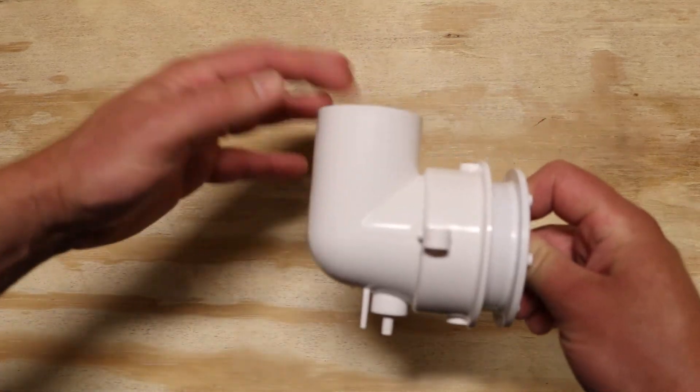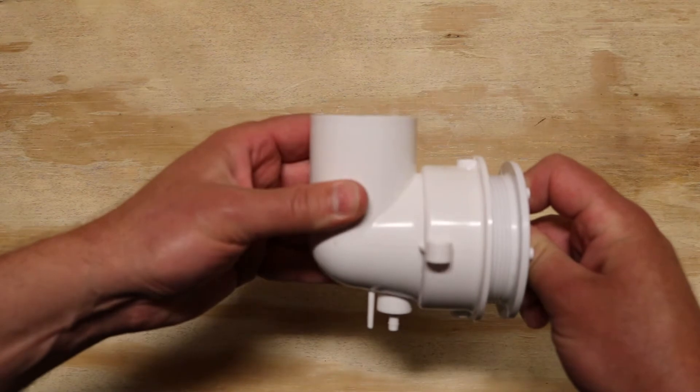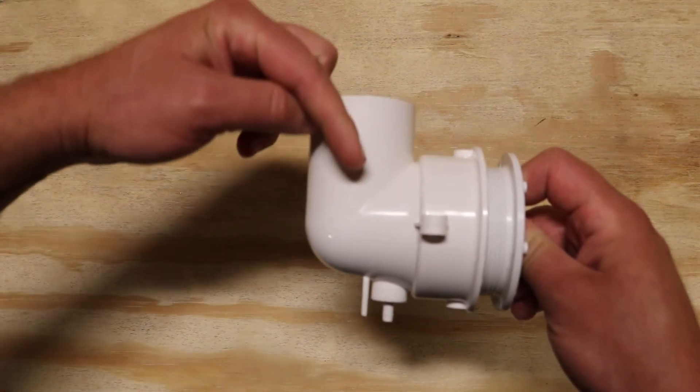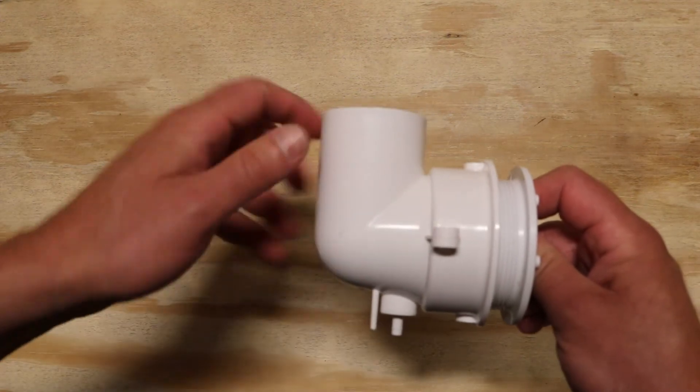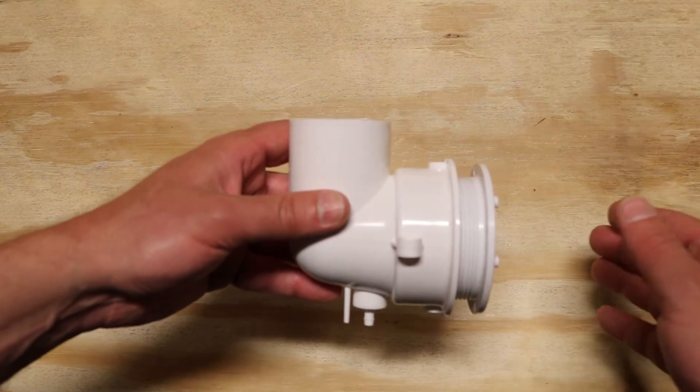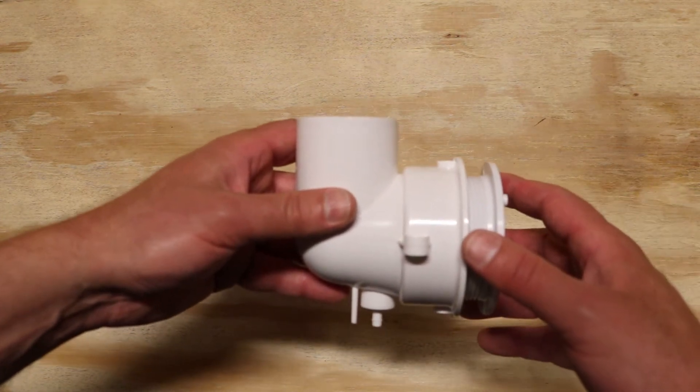Make sure when you tighten this up, you have a little bit of pitch coming down towards the suction assembly, not towards the pump, but towards the suction assembly so all the water in the pump drains out back into the bathtub. That's very important to maintain that pitch.